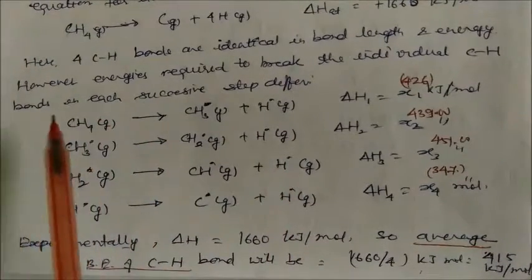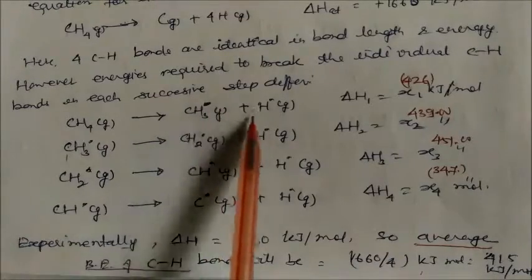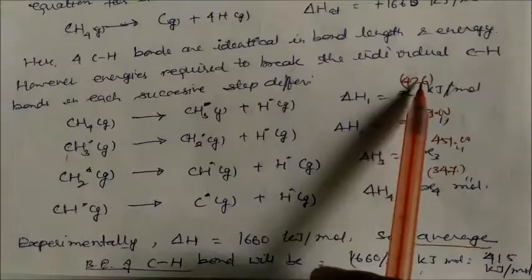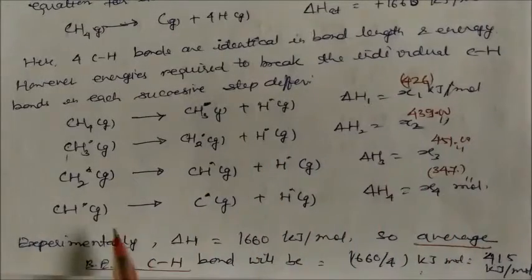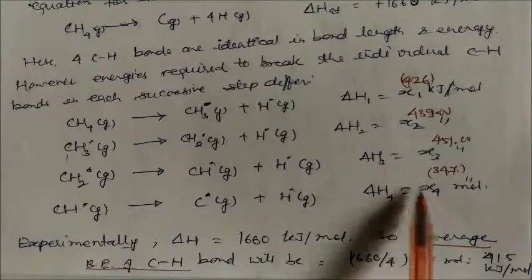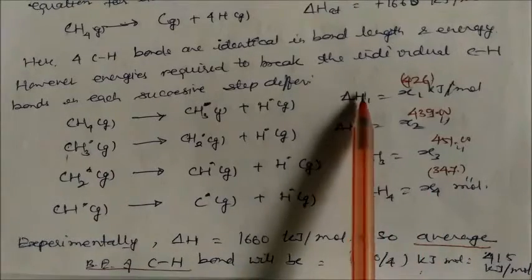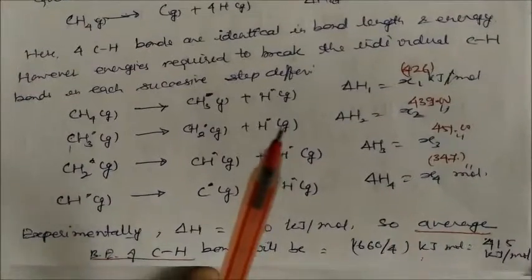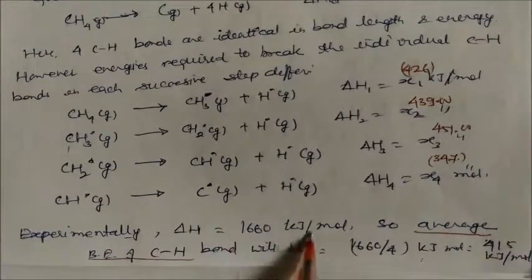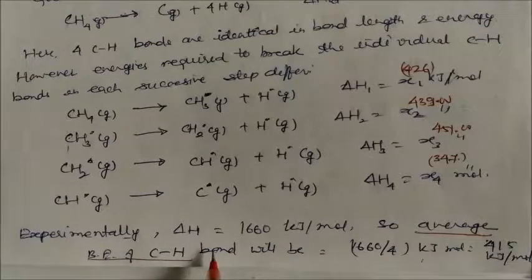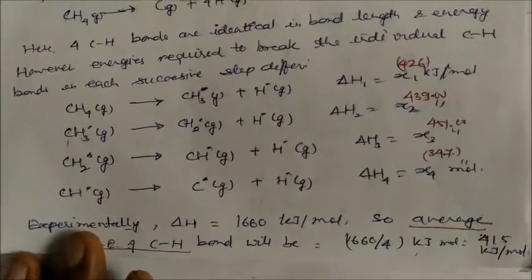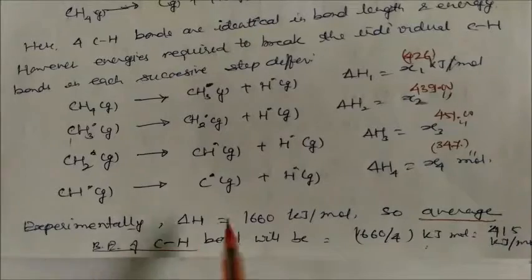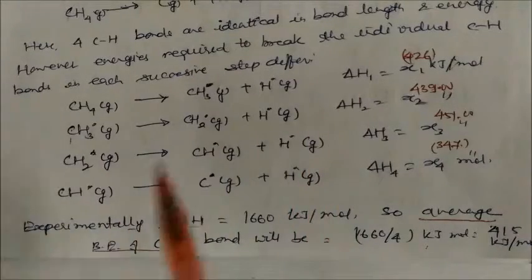Breaking the first C–H bond of CH₄ gives CH₃· + H· requiring 426 kJ/mol. Each successive cleavage — second, third, fourth — requires a different energy experimentally. The average bond energy of C–H = total energy divided by 4 = 415 kJ/mol. We cannot find bond energy directly; we must follow this stepwise approach.